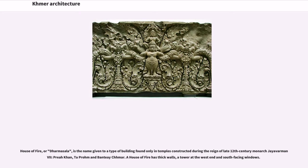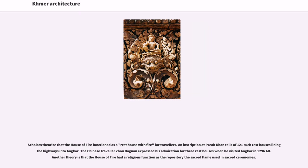The House of Fire, or Dharmashala, is a type of building found only in temples constructed during the reign of late 12th-century monarch Jayavarman VII — Preah Khan, Ta Prohm, and Banteay Chhmar. A house of fire has thick walls, a tower at the west end, and south-facing windows. Scholars theorize that it functioned as a rest house with fire for travelers; an inscription at Preah Khan tells of 121 such rest houses lining highways into Angkor. The Chinese traveler Zhou Daguan expressed his admiration for these rest houses when he visited Angkor in 1296 AD. Another theory is that the house of fire had a religious function as the repository of a sacred flame used in ceremonies.